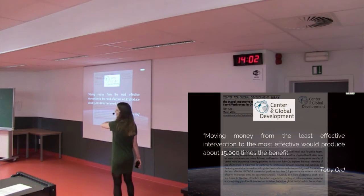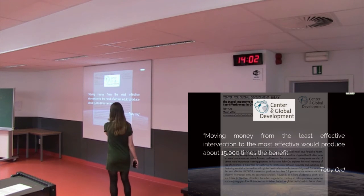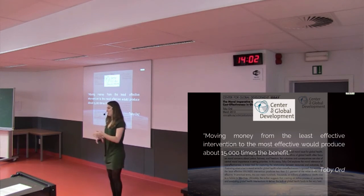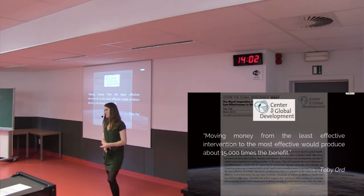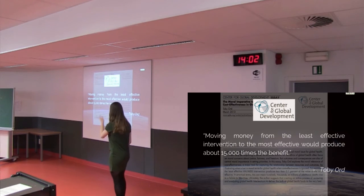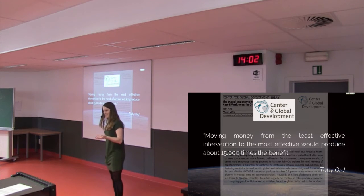So Toby Ord, who is one of the founders of CEA, wrote this paper where he compared the very worst interventions you could find, those which have little or no effect, to the very best we can find. And the difference between those is about 15,000 times bigger. So that means if we move the $1 that we might have given to some of the worst charities in the world to the very best, rather than saving one life for that dollar, we could save an entire village or an entire city.